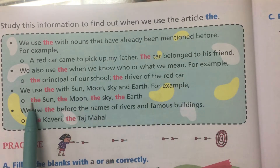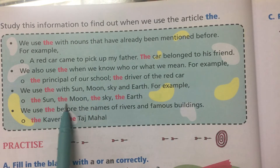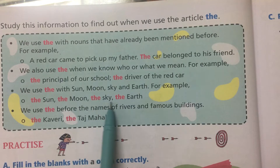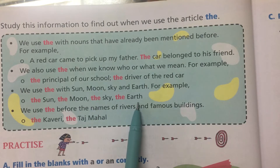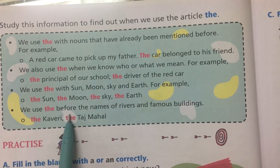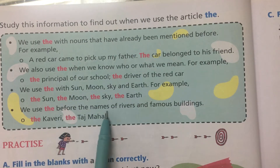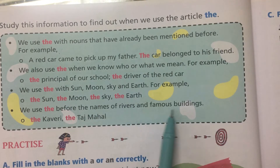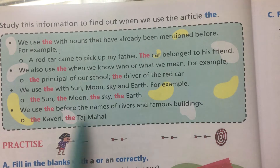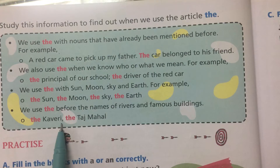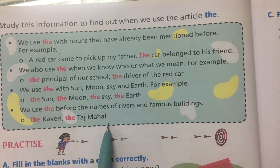For example: the sun, the moon, the sky, the earth. We use The before the names of rivers and famous buildings. For example: the Kaveri, the Taj Mahal.